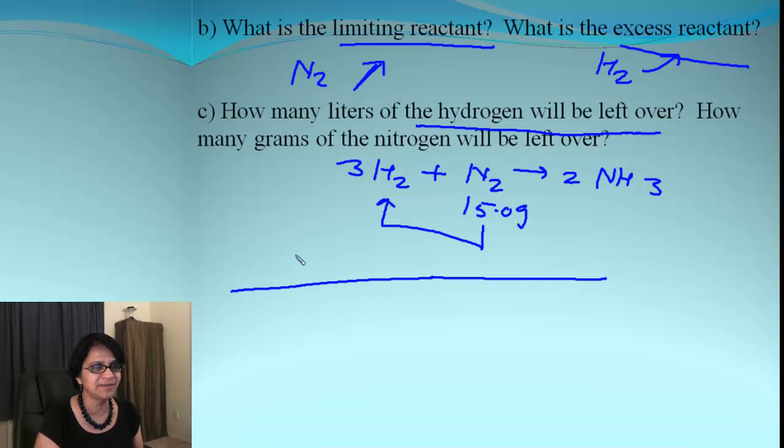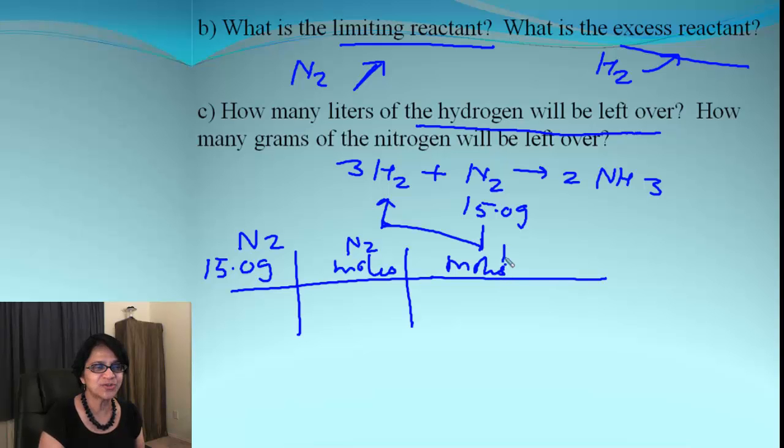Let's get our road map and our grid. So that's my beginning point, 15.0 grams of nitrogen. You go to the moles of nitrogen. And then you go to the next point which is moles of hydrogen. And from there, we are going to go to liters of hydrogen because the quantity of hydrogen was given to us in liters. If it was given to us in grams, we will go to grams. And now we are going to cancel it.